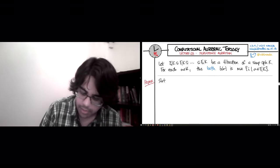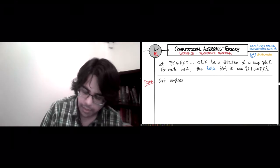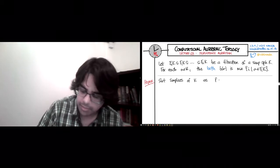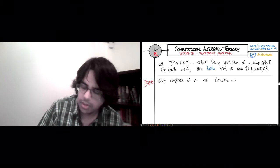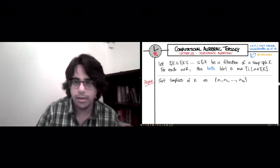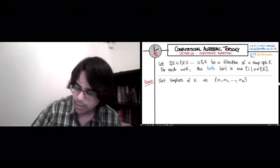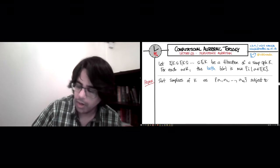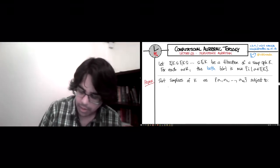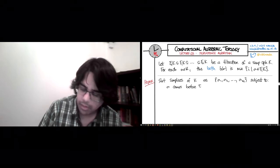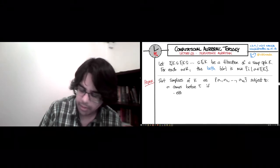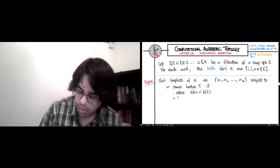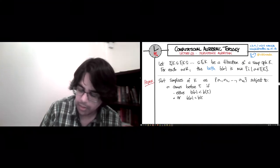So sort the simplices of K as some sigma 1, sigma 2, and let's say they're big N simplices, so they're subject to the following requirements. So sigma comes before tau if either it is born before tau, so B sigma is strictly smaller than B of tau, or the births are equal, but sigma is a face of tau.